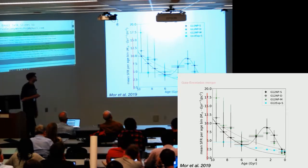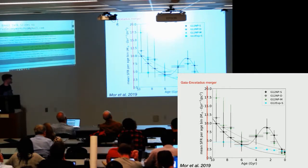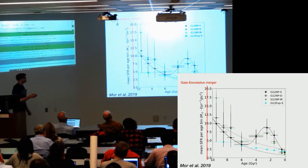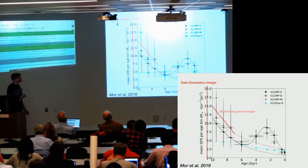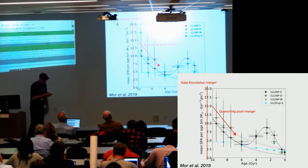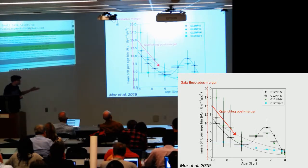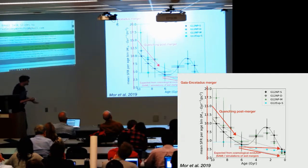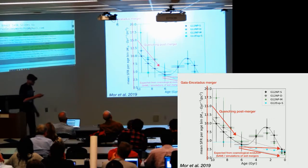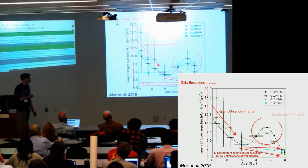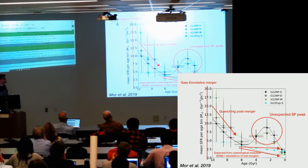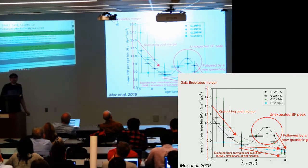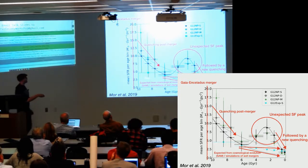In that diagram, assuming the Gaia-Enceladus merger at about 10 to 11 gigayears ago, we recover the quenching post-merger very clearly. What we would expect after this quenching, from cosmology and other models, would be something flat or slightly decreasing for the star formation rate. But we found a very clear peak in star formation, followed by a new quenching episode much stronger than the previous one.